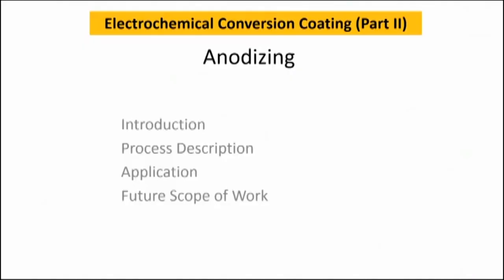In this talk we will discuss about electrochemical conversion coating, and particularly the electrochemical conversion coating deals with those techniques where you use electrochemical means to form a compound layer on the surface of metallic materials.